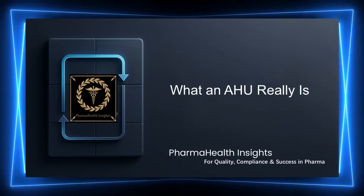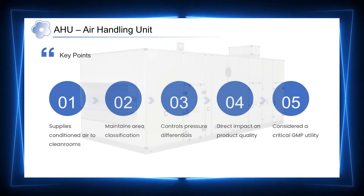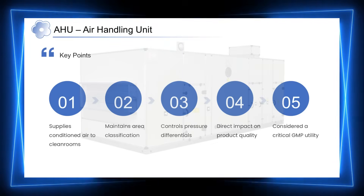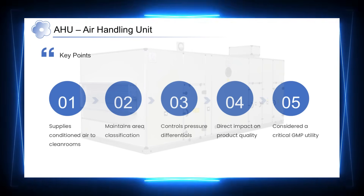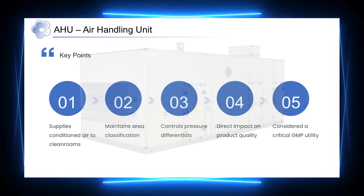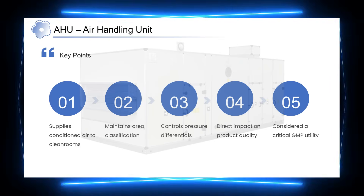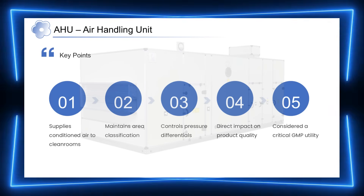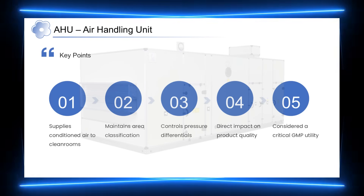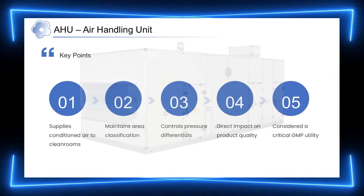So now let's shift our focus to the most critical element: the AHU. In pharmaceutical manufacturing, an AHU is not just another piece of HVAC equipment. It is the unit that directly supplies conditioned and filtered air to clean rooms and controlled areas. By doing so, the AHU plays a key role in maintaining area classification, controlling pressure differentials, and ensuring that air moves in the intended direction. Because the air supplied by the AHU comes in direct contact with the manufacturing environment, it has a direct impact on product quality. That is why, in pharma, AHUs are treated as critical GMP utilities, not merely mechanical systems.